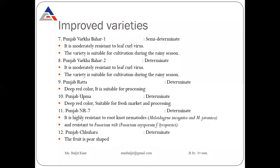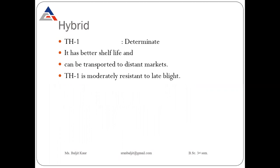Punjab Shuhara has determinate growth habit and pear-shaped fruit. Among hybrids, TH1 has determinate growth habit, better shelf life, can be transported to distant markets, and is moderately resistant to late blight. Some varieties are resistant to diseases, some are suitable for processing, some for fresh market, and some are suitable to grow in the rainy season.